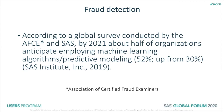In a majority of settings, rules-based systems are used when trying to detect fraud and abuse. There's currently a shift underway to supplement those rules-based systems with machine learning. According to a global survey conducted by the Association of Certified Fraud Examiners and SAS, by 2021 about half of organizations anticipate employing machine learning algorithms in addition to or supplementing their rules-based systems. We see this as being an increase from about a third of the industry, about 30 percent, over the next couple of years — a big jump in those looking at using these types of techniques in fraud detection.